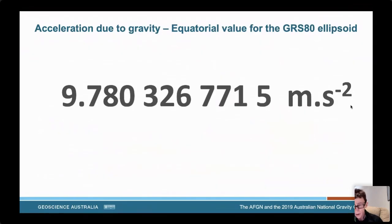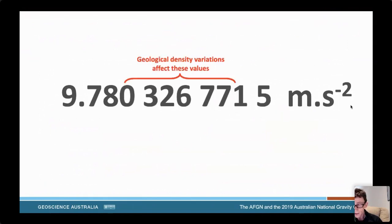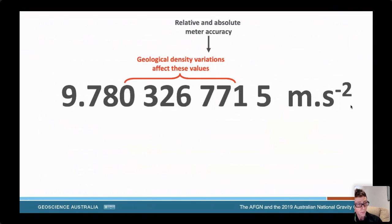We actually know the acceleration due to gravity at the equator pretty well. The bad news is that the gravity effects of geology are quite small compared to the overall value. They affect gravity at the level shown in red. The largest of these effects is in the fourth significant figure — that means 0.01% of the signal at most. With some good news, however, we have instruments that are accurate enough to measure these effects. They're good enough to measure the weight of a typical person down to one hundredth of a gram.